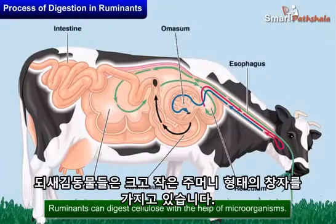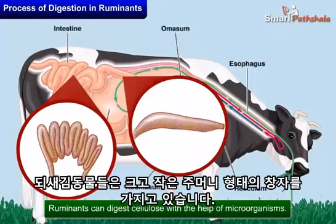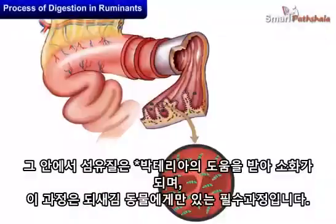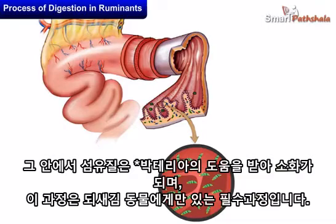Ruminants have a large sac-like structure between the small intestine and large intestine. The cellulose of the food is digested in this large sac by the action of certain bacteria which are not present in humans.